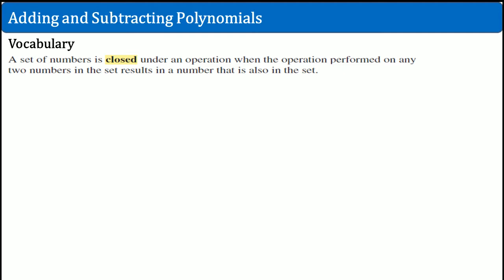What that means is this: if you add a number to another number, it's going to be equal to a number. So if this is, let's say, all integers — that is closed. What is not closed would be something like a number multiplied by another number that results in a negative — that would not be closed.